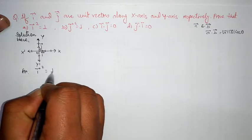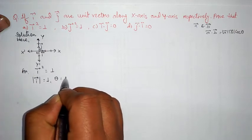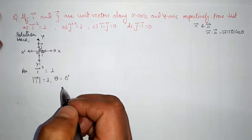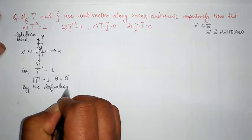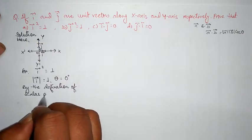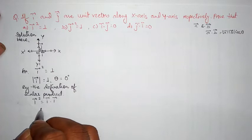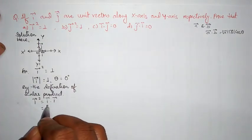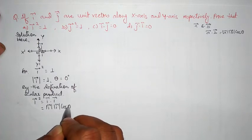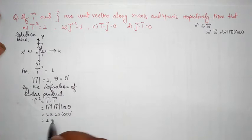For i vector squared equals 1: the magnitude of i is 1 and the angle between i and itself is 0 degrees, since the same vector always makes 0 degrees with itself. By the definition of scalar product, i vector squared can be written as i vector dot i vector, which equals magnitude of i into magnitude of i into cos 0 degrees. That is 1 into 1 into cos 0, and cos 0 equals 1, so 1 into 1 equals 1. Therefore i vector squared equals 1 is proved.